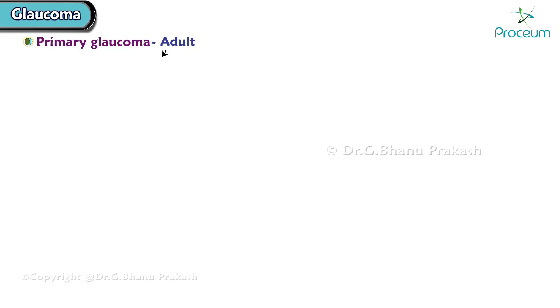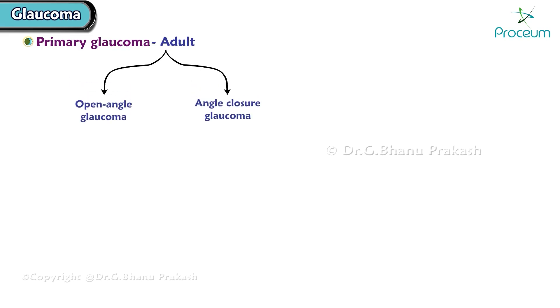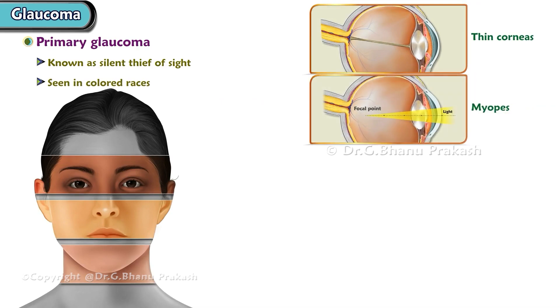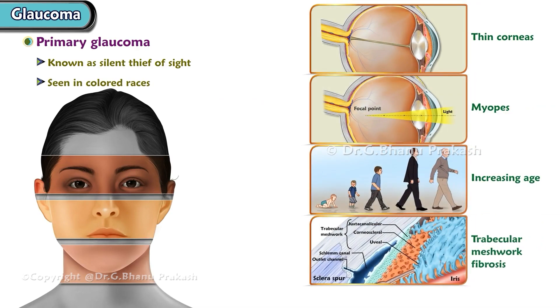Primary adult glaucoma can be of two types: open angle glaucoma and angle closure glaucoma. Primary open angle glaucoma is known as the silent thief of sight. It is usually seen in colored races, people with thin corneas, myopes, increasing age, trabecular meshwork fibrosis, and those with the myocilin gene and optineurin gene mutations.